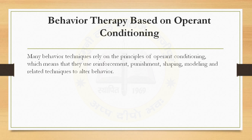Now we discuss behavior therapy based on operant conditioning. Many behavior techniques rely on the principle of operant conditioning, which means that they use reinforcement, punishment, shaping, modeling, and related techniques to alter behavior. These methods have the benefit of being highly focused, which means that they can produce fast and effective results.